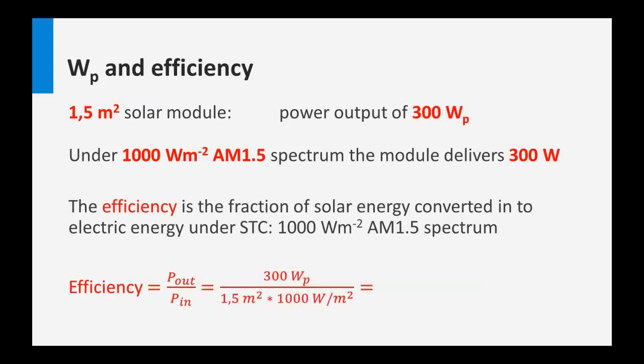Looking again at this solar module of 1.5 square meters, the output under standard test conditions is 300 watts — the 300 watt peak. The power input is 1.5 square meters times the irradiance at standard test conditions, which is 1000 watts per square meter, giving 1500 watts input. So the efficiency is 300 watts divided by 1500 watts, which means the efficiency of this module is 20%.